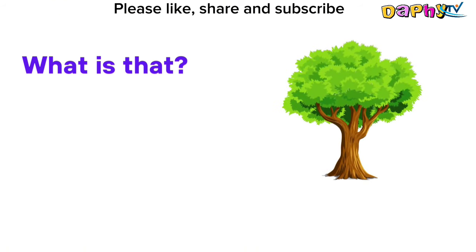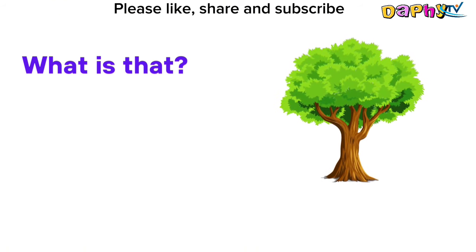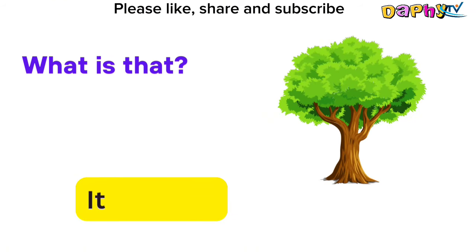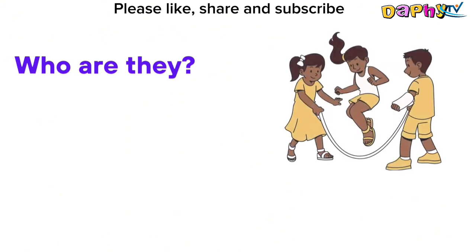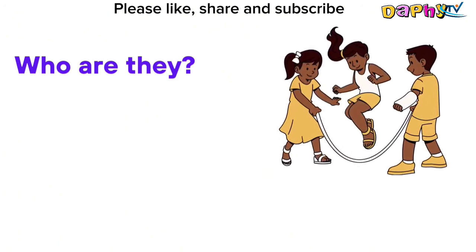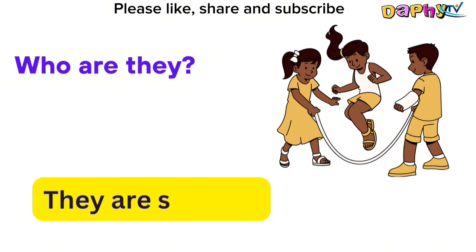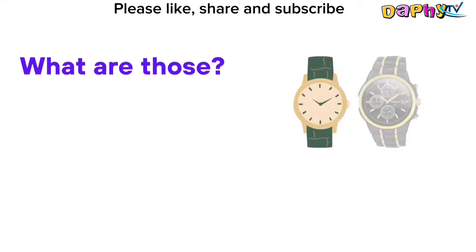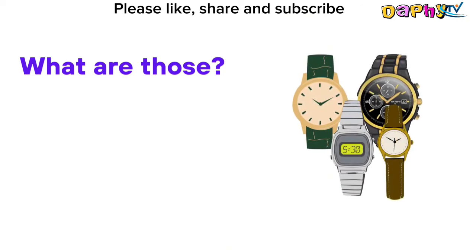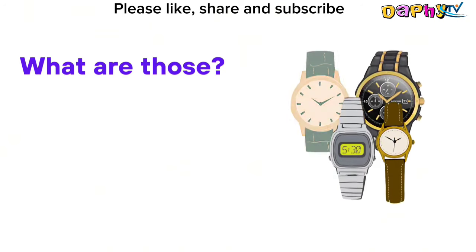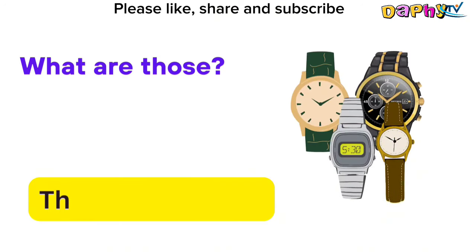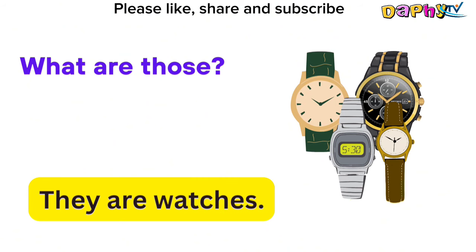What is that? It is a tree. Who are they? They are siblings. What are those? They are watches.